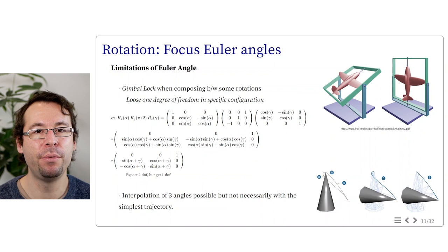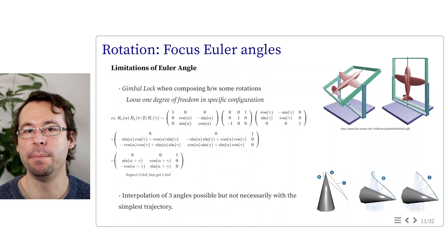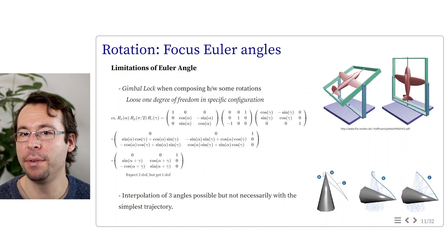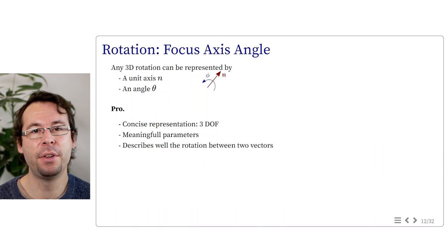Euler angles can be used to interpolate rotation by simply interpolating each angle separately. The result is still a valid rotation going from the initial to the target, but the trajectory followed by a rotating point may not be the simplest possible one.